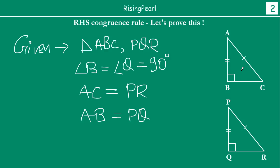We are going to do a small construction. What we do is take triangle PQR and extend side RQ to a point S such that QS becomes equal to BC. So by construction, QS equals BC. This means the third side of the second triangle's extension matches the third side BC of the first triangle, since AC equals PR and AB equals PQ respectively.